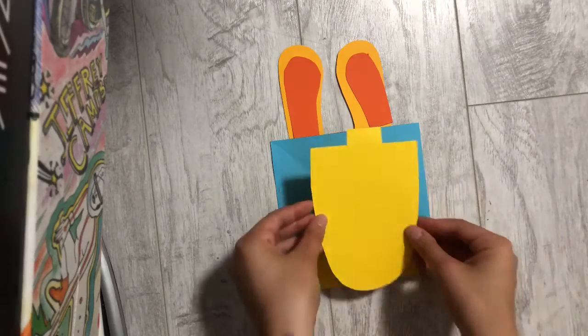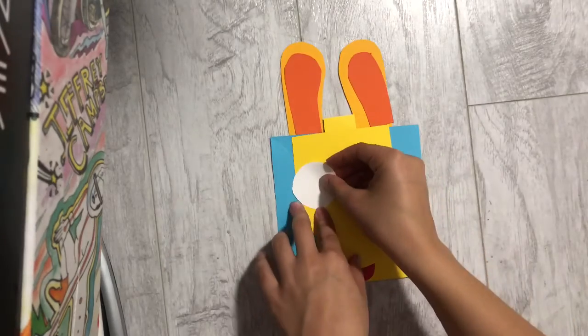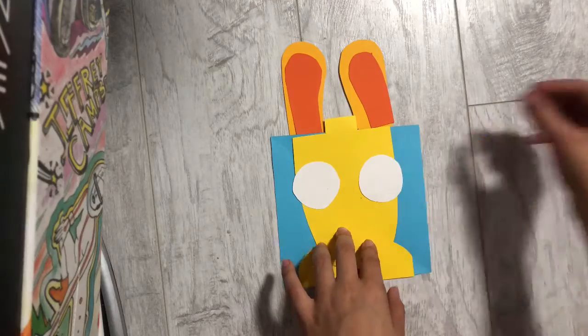Next we are going to glue on our smaller details such as the ears, the face, the eyes, and the nose of the dog.